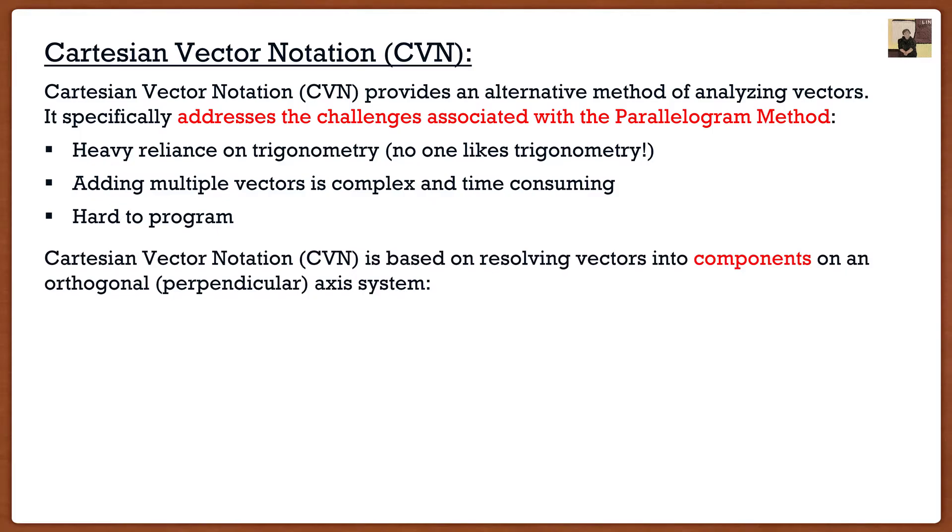Cartesian vector notation is based upon resolving vectors into components on an orthogonal axis system, where orthogonal is basically perpendicular. An orthogonal axis system is something you guys are already used to. For instance, it's a simple x and y coordinate system. As we can see, the x-axis and the y-axis are perpendicular to each other. They form a nice 90 degree angle, and that is going to be the key to making our lives easier.